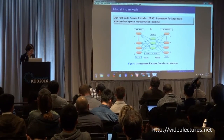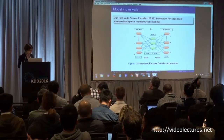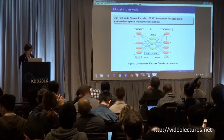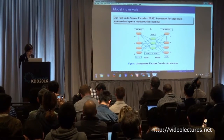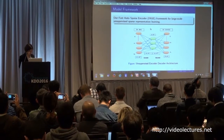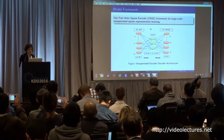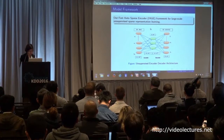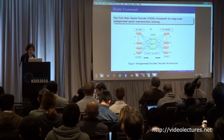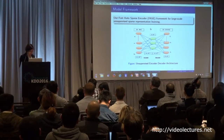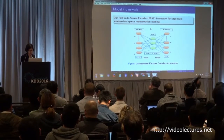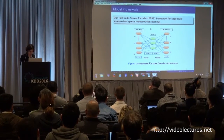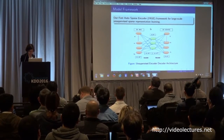Here you can see the framework of this module. The module has two parts: one encoder and one decoder. In the encoder, image patches are given as input. The encoder maps these inputs to code vectors, and then the decoder starts its work, reconstructing the input to be as close as possible to the original sample.